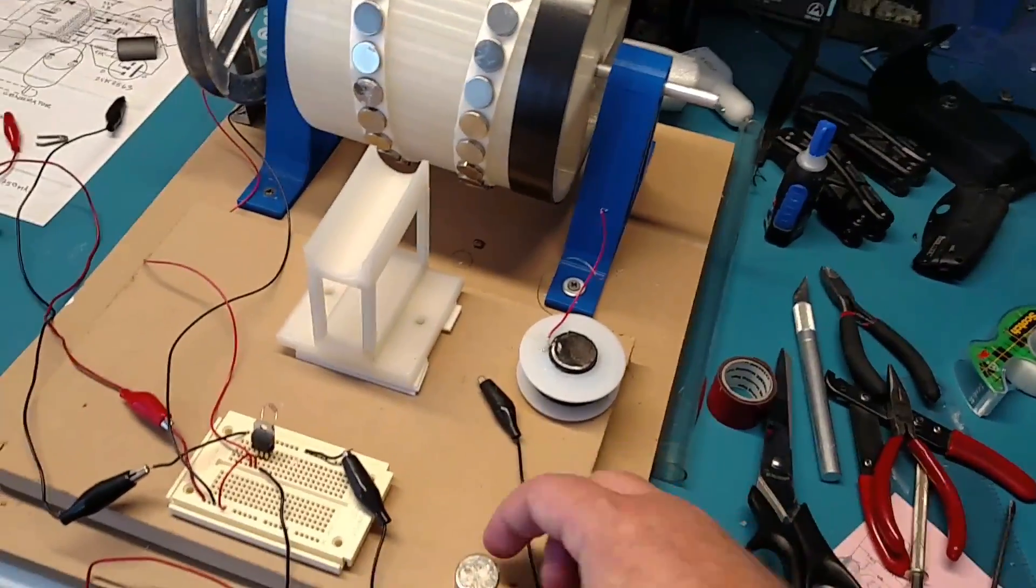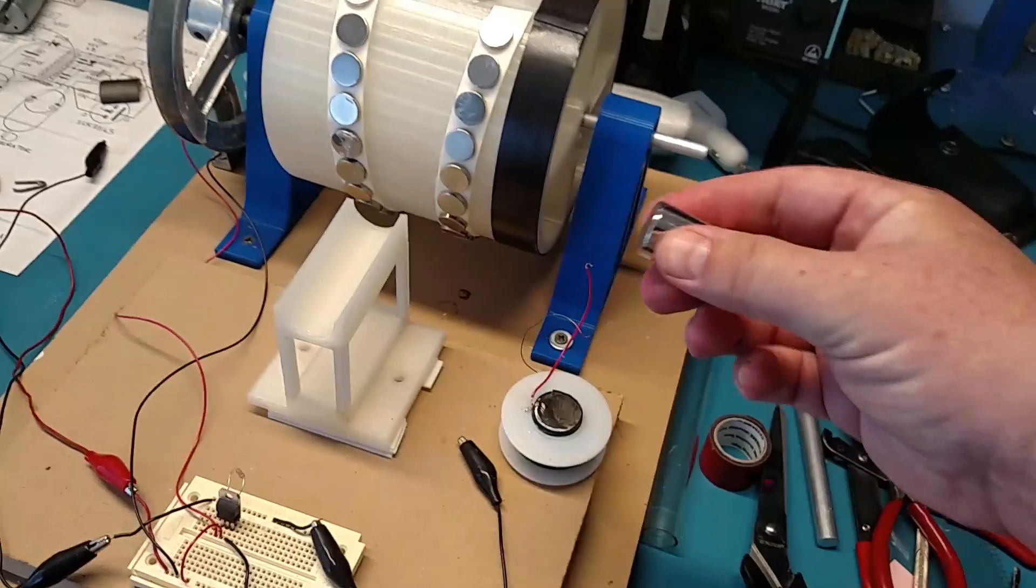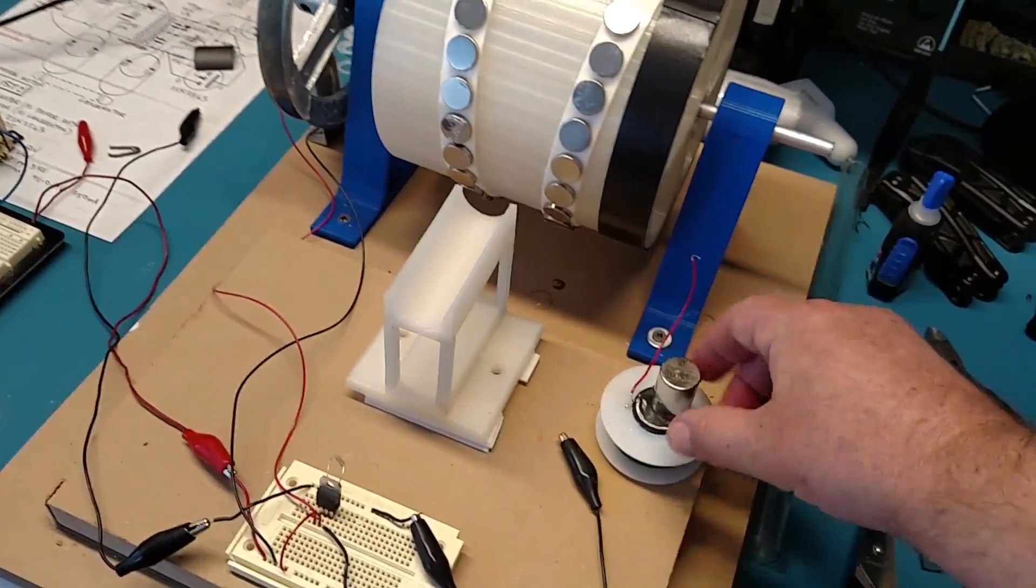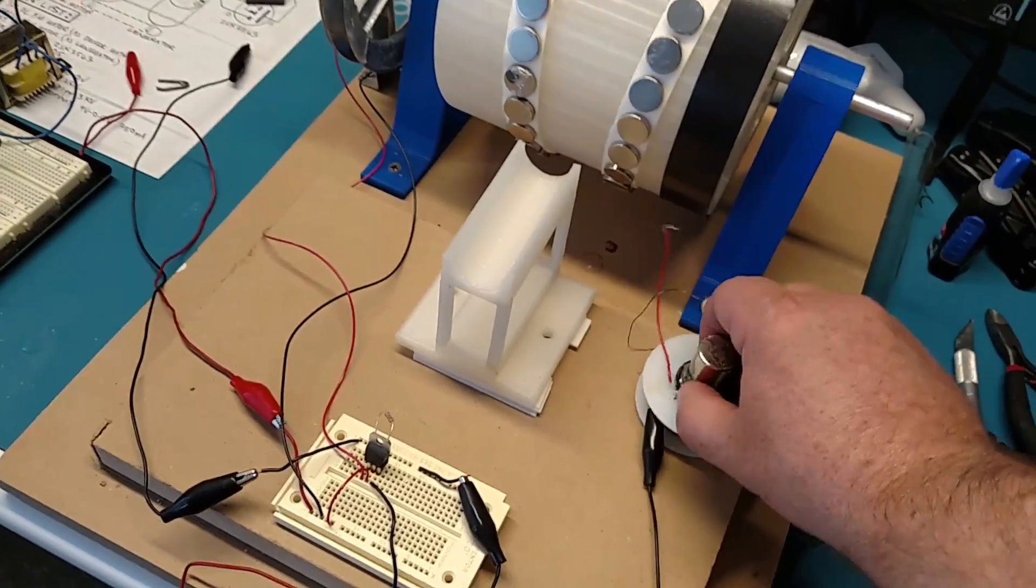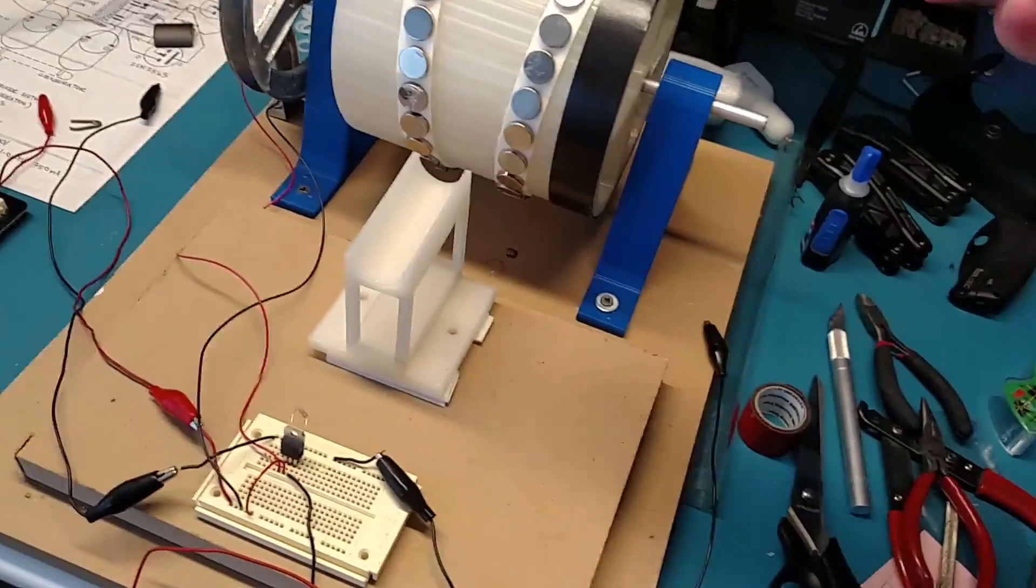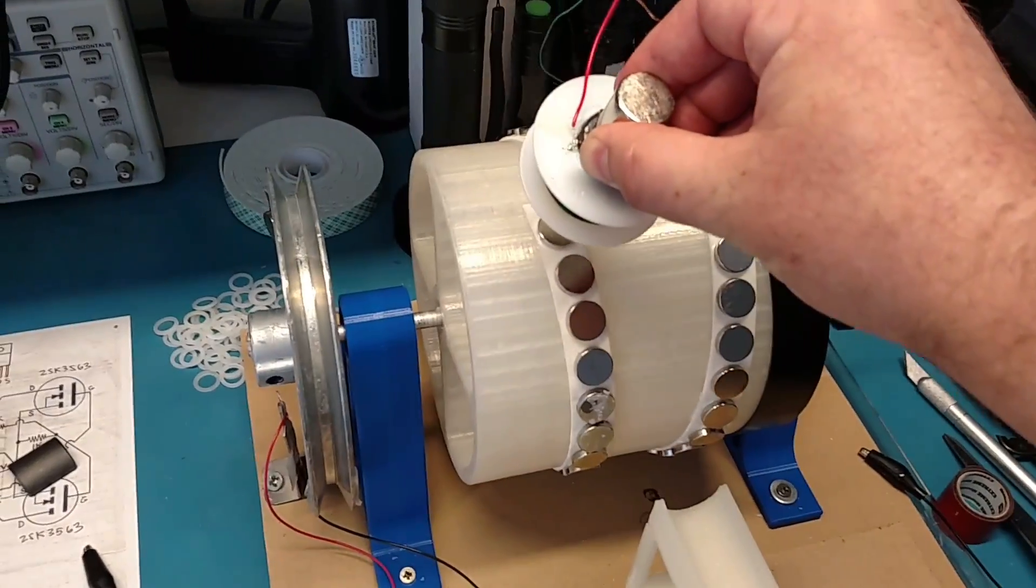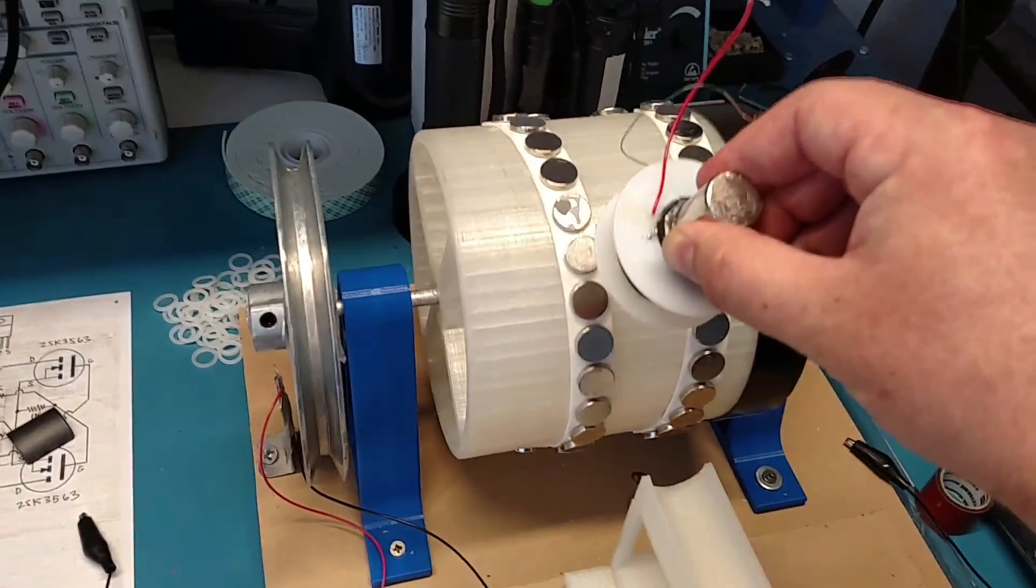However, when you take this permanent magnet right here and you snap it to the top, suddenly the opposite side starts to repel.